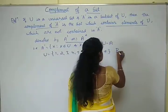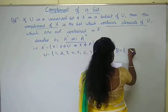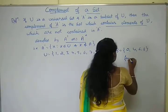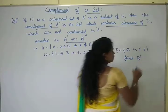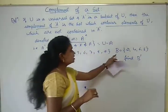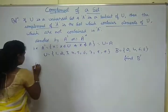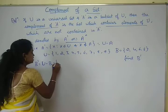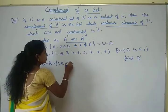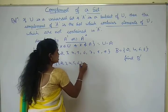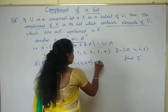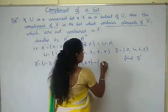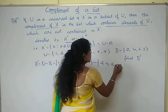Consider another set B = {2, 4, 6, 8}. Find B dash. B dash is equal to U minus B. So U is {1, 2, 3, 4, 5, 6, 7, 8, 9} minus B which is {2, 4, 6, 8}. First, identify the elements present in both sets. That is 2, 4, 6, and 8.